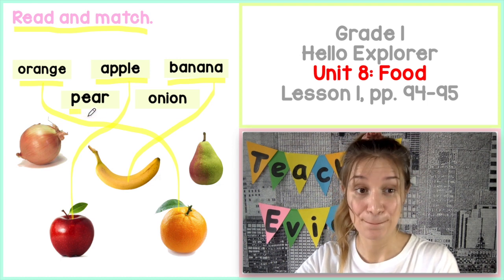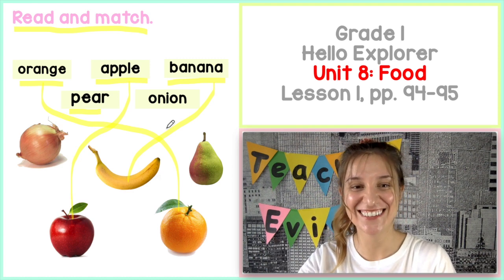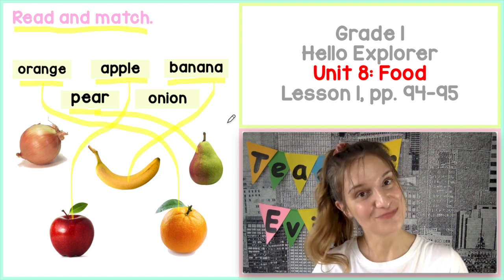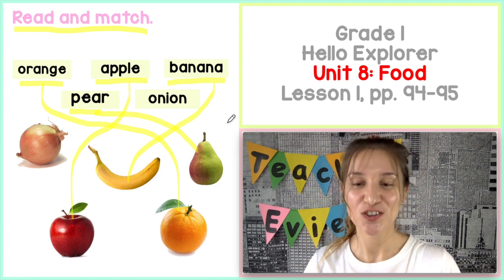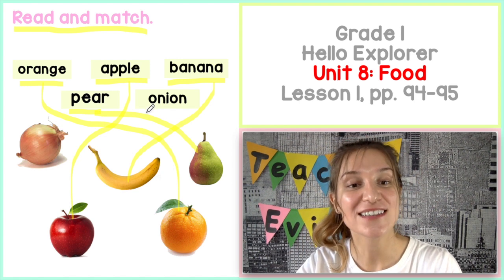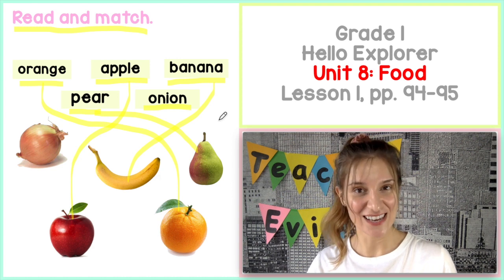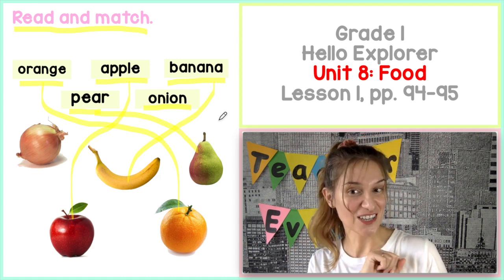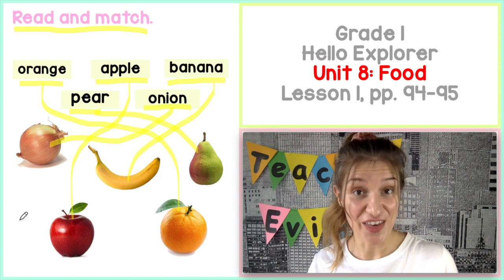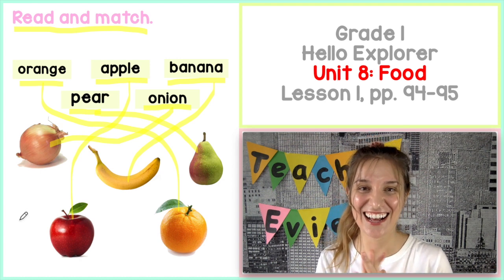How about this word? Pear. This is a pear. To jest gruszka. And the last word. Ostatnie słówko. Onion. Use your finger. Używaj paluszka. Gdzie jest onion? This is an onion. Well done.